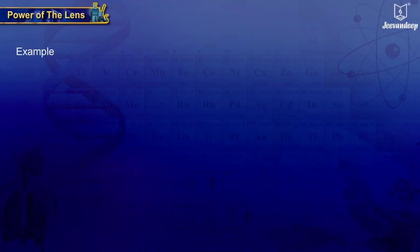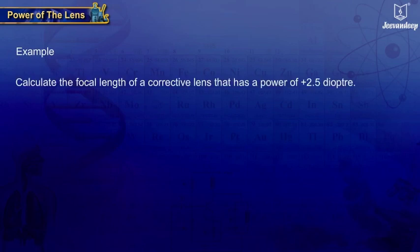Example: Calculate the focal length of a corrective lens that has a power of plus 2.5 diopter.